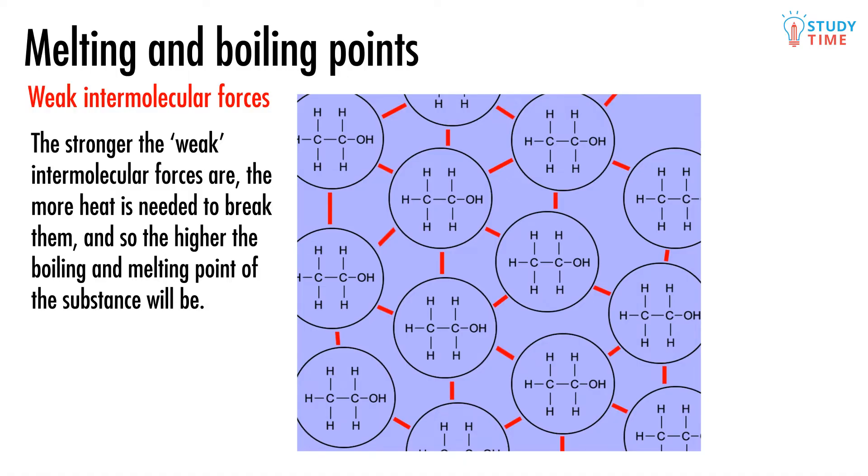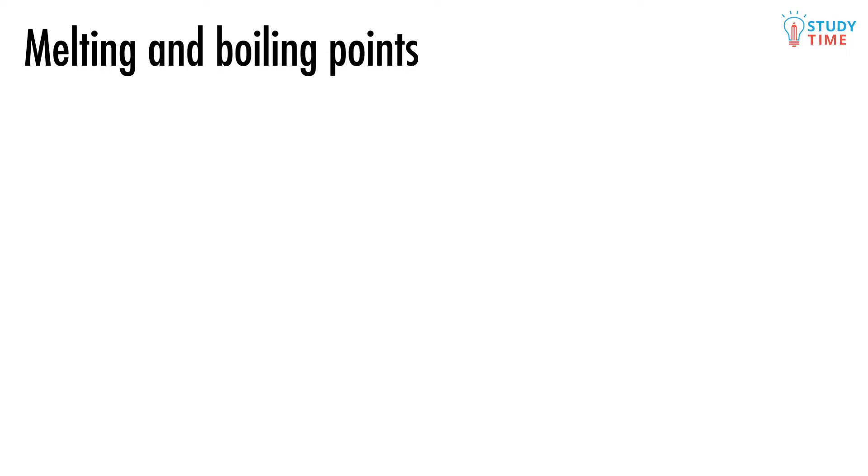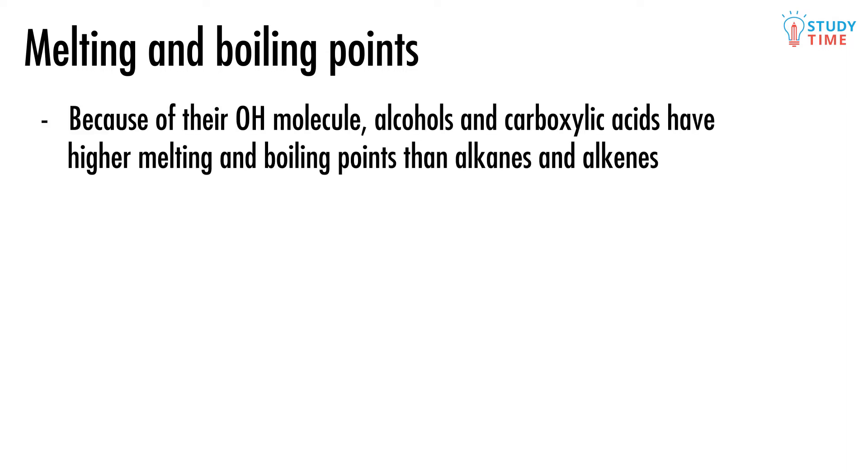Aside from this theory, it's useful for you to know a couple of specifics. For example, it's useful for you to know that, because of their OH molecule, alcohols and carboxylic acids have higher melting and boiling points than alkanes and alkenes, and carboxylic acid's boiling point is higher than the boiling point of its corresponding alcohol.